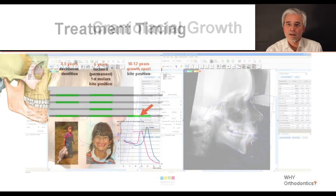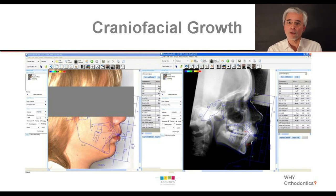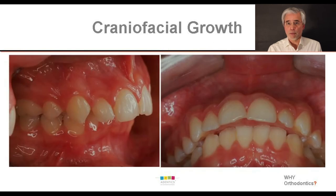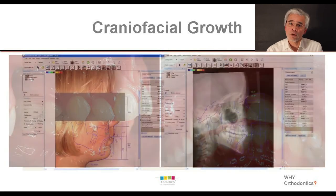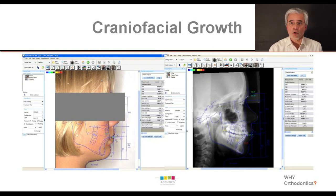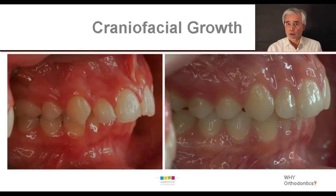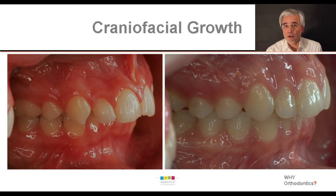Let's take a quick look at a treatment example. This patient had a growth deficiency in her lower jaw and therefore the dental arches could not fit together properly. With a functional appliance — an activator — we could foster the growth of the lower jaw at the time of the main growth spurt. And so it came more forward and took the teeth with it. Now the dental arches fit together, as you can see in the comparison before and after.